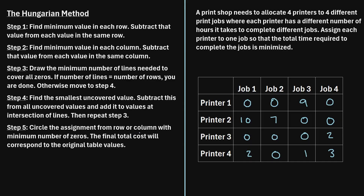Step five says: circle the assignment from the row or column with the minimum number of zeros. Counting zeros — row one has three zeros, row two has two, row three has three, and row four has only one zero. In columns: column one has two, column two has three, column three has two, and column four has two zeros. Since row four has only one zero, we circle it — assigning printer four to job number two.